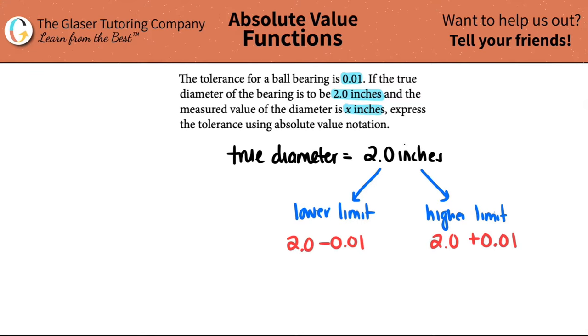So for whoever is making this ball bearing, they're actually going to get an actual diameter of x. It just has to be in between these two limits. So the actual measured value of the diameter of this ball cannot be higher than 2 inches plus the 0.01 or the lower limit.